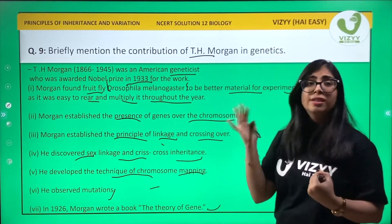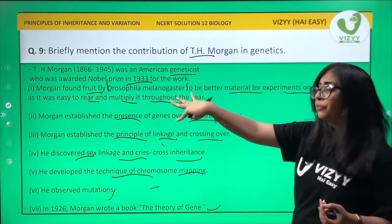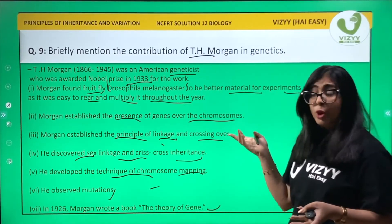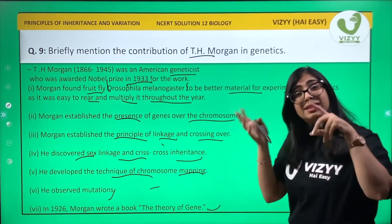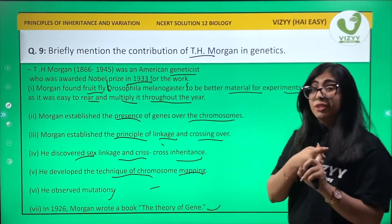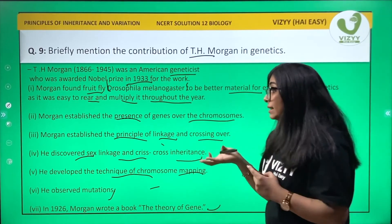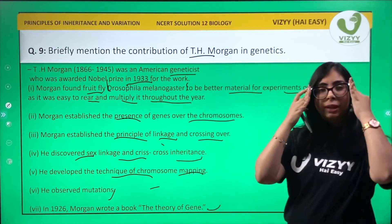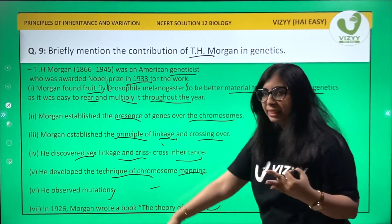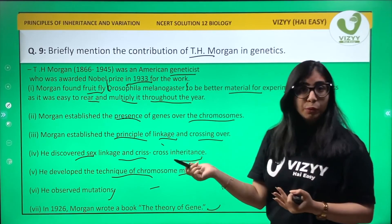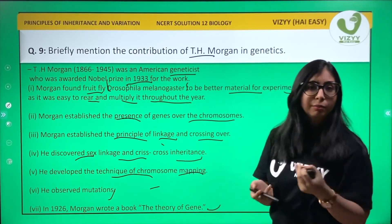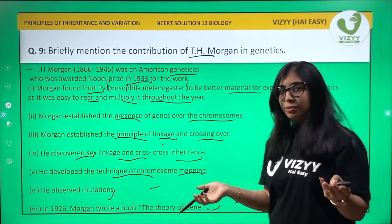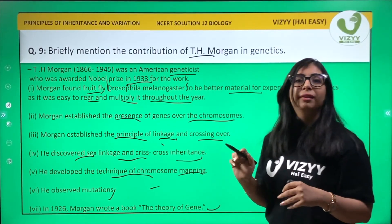To summarize: he started with Drosophila, then established the presence of genes on chromosomes, then described linkage and crossing over, then developed a technique for chromosome mapping, observed mutations, and lastly wrote the book 'Theory of the Gene.' This concludes question number nine.